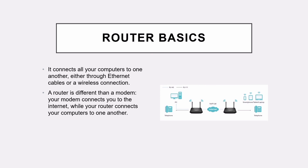In router basics, it connects all your computers to one another either through Ethernet cables or a wireless connection. You need to use the Ethernet cable to connect the router to your modem, or it can also be through a wireless connection. A router is different than a modem — your modem connects you to the internet while your router connects your computer to another computer.